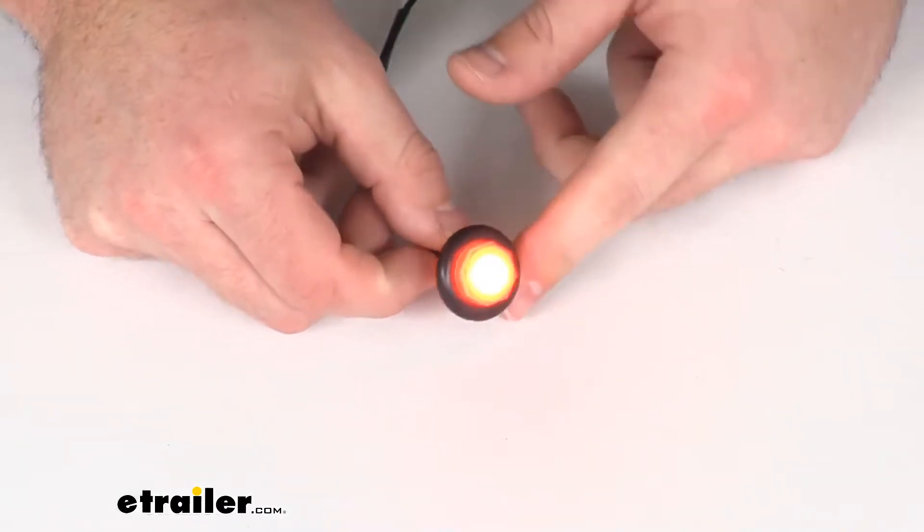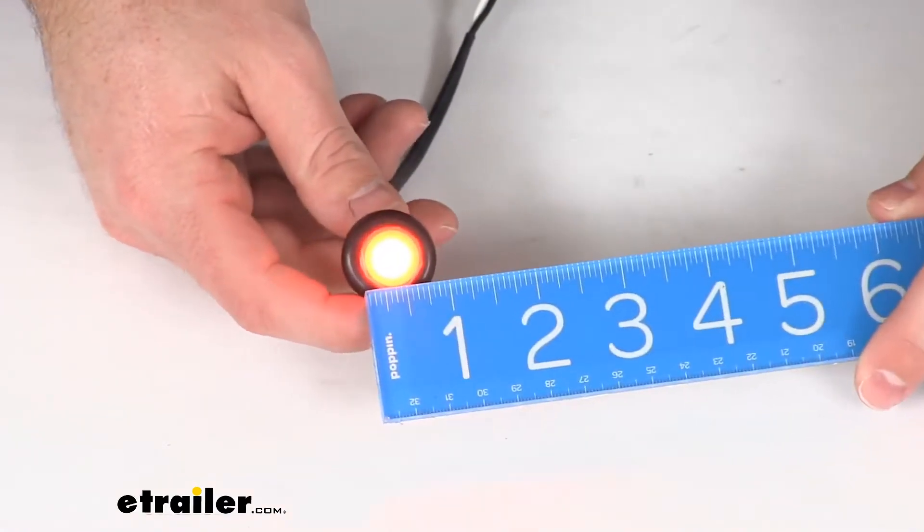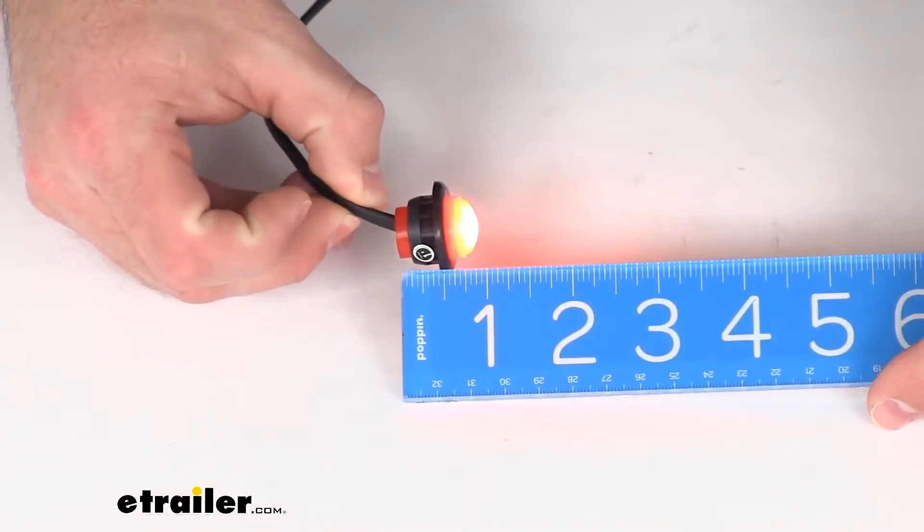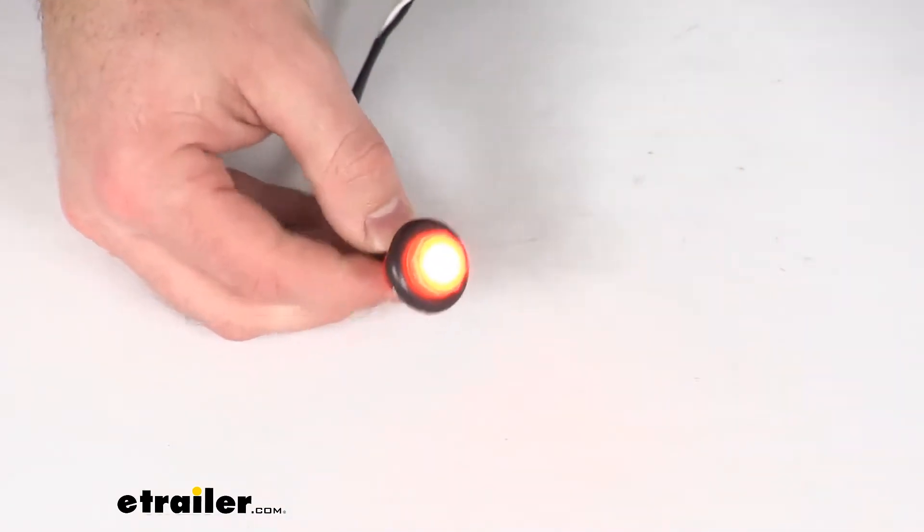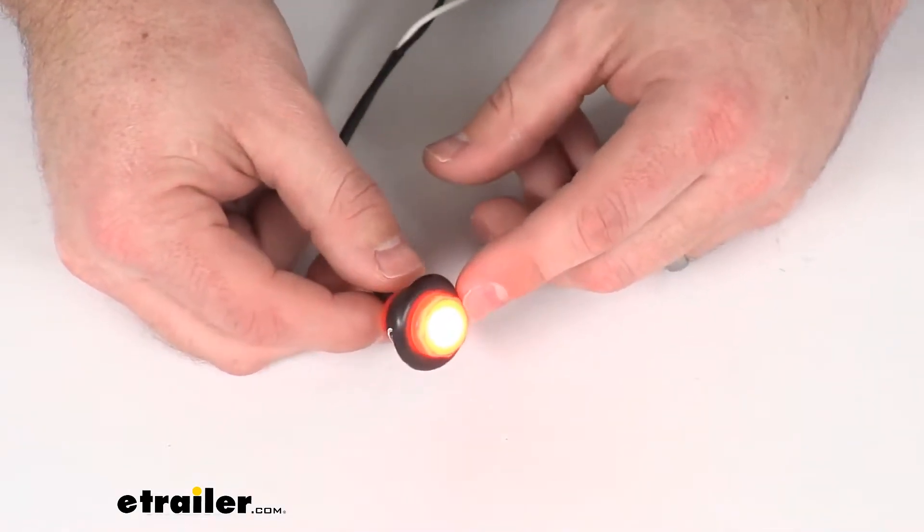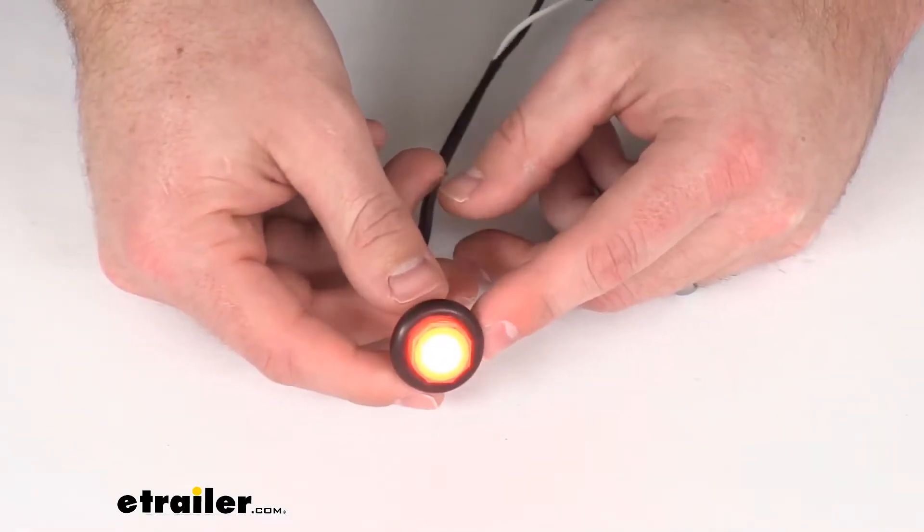This is a three-quarter inch diameter by seven-eighths inch round trailer light that can function as both a clearance light or a side marker light, depending on how you have it installed.